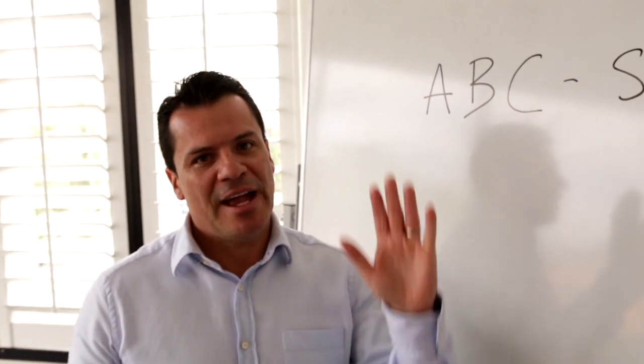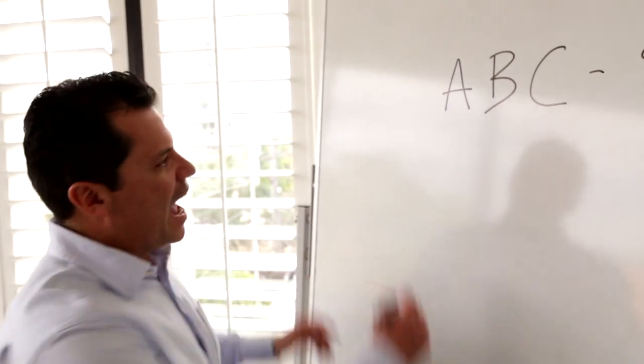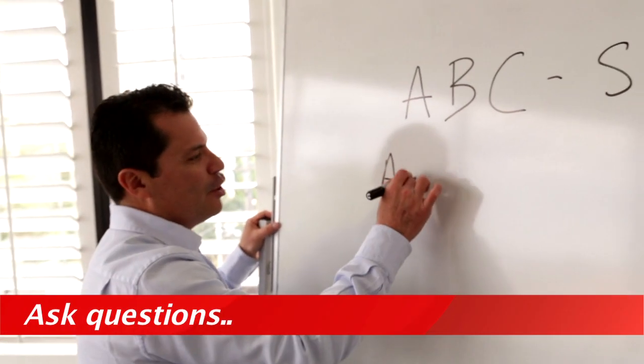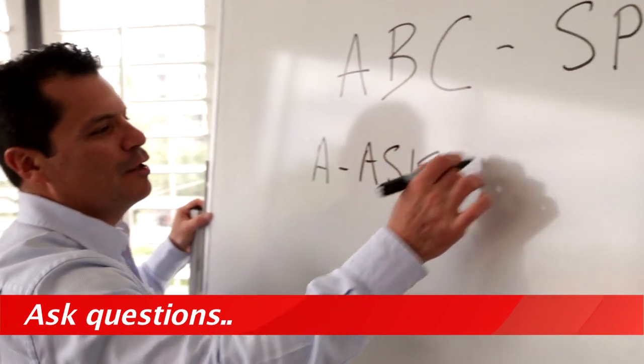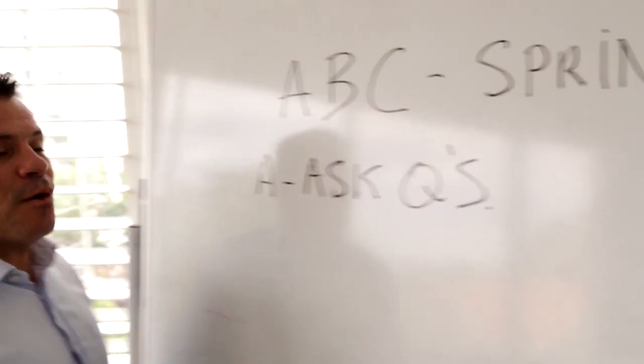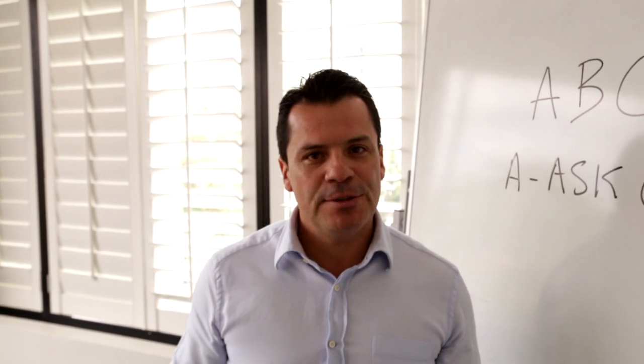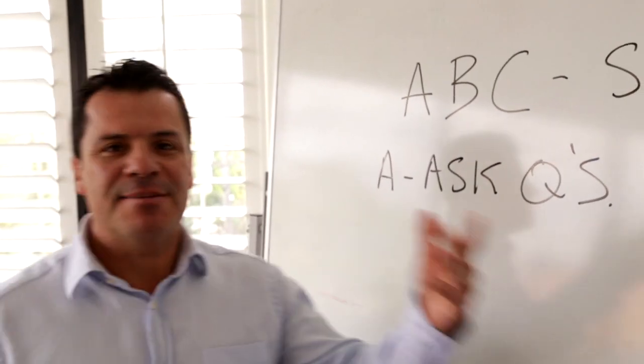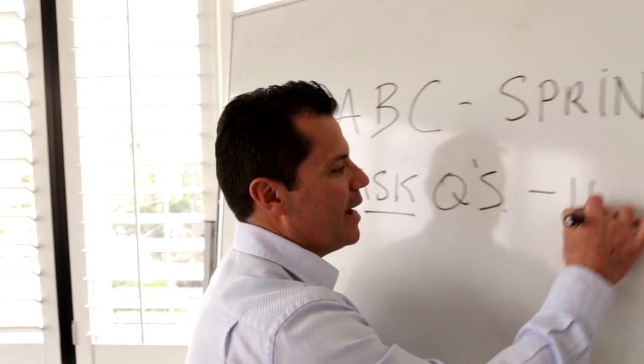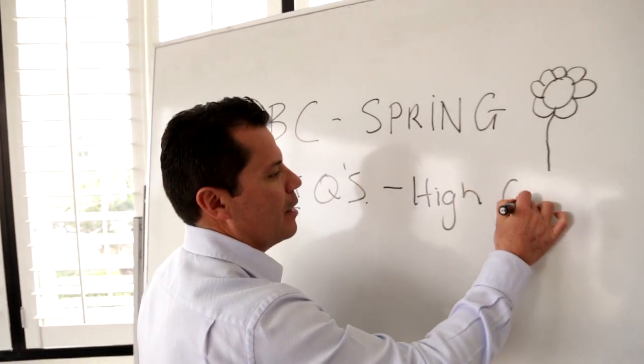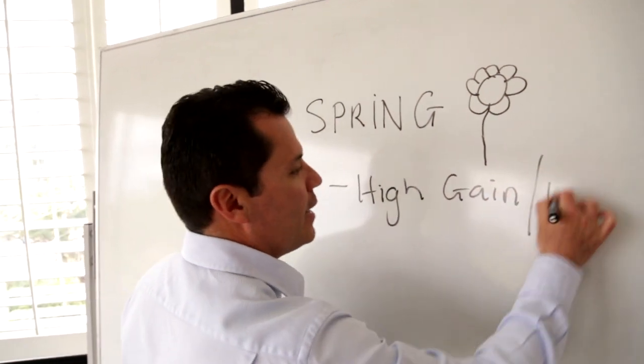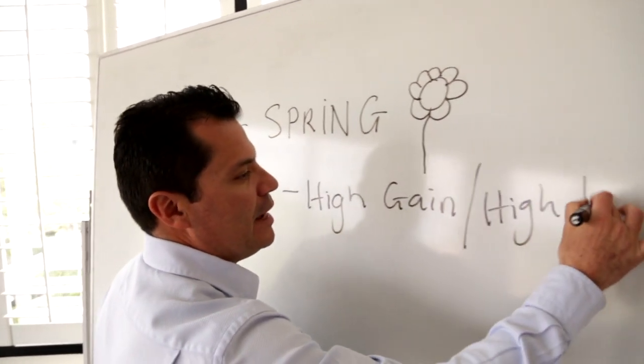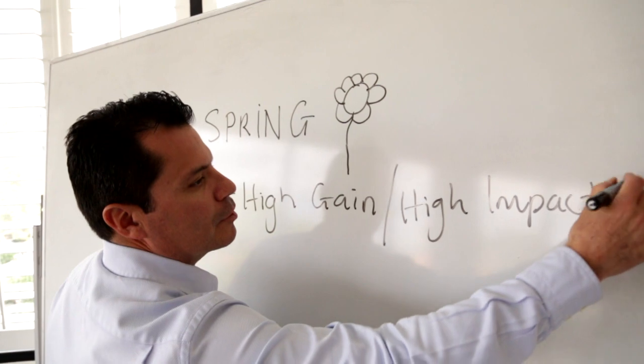The ABC for spring as we head over the next 90 days is A: you've got to ask questions. So when you're in people's lounge rooms, when you're talking to people on the phone, I recommend that the A is about ask. Ask high-gain, guess what else, high-impact questions.